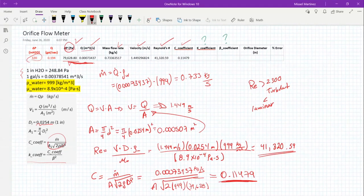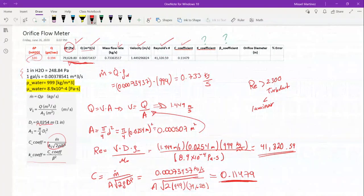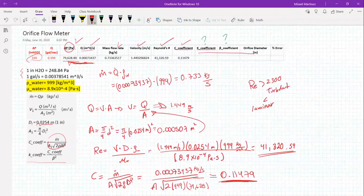Welcome everyone to the Orifice Flow Meter. We're going to go over how to find your coefficients: your k-coefficient, c-coefficient, and b-coefficient.